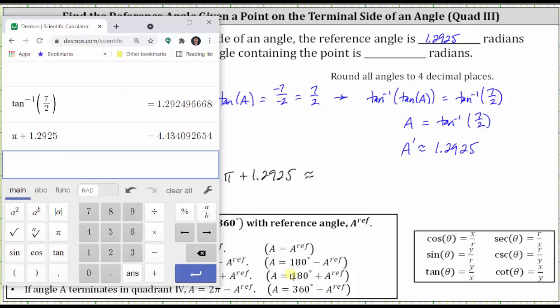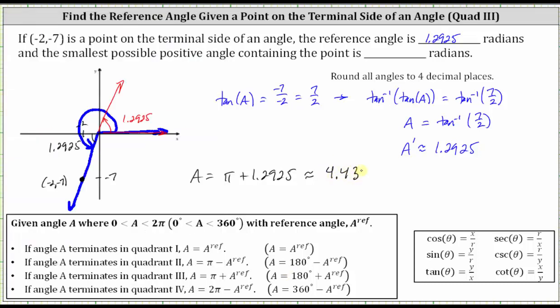And now it's determining the angle we are looking for by determining the sum. The smallest possible positive angle, passing through the given point, is approximately 4.4341 radians. I hope you found this helpful.